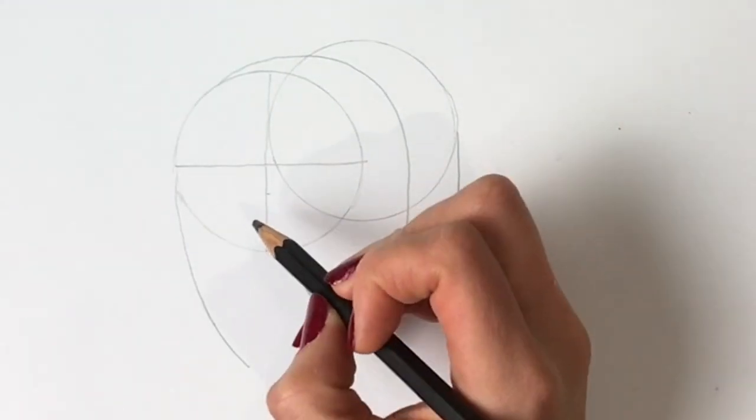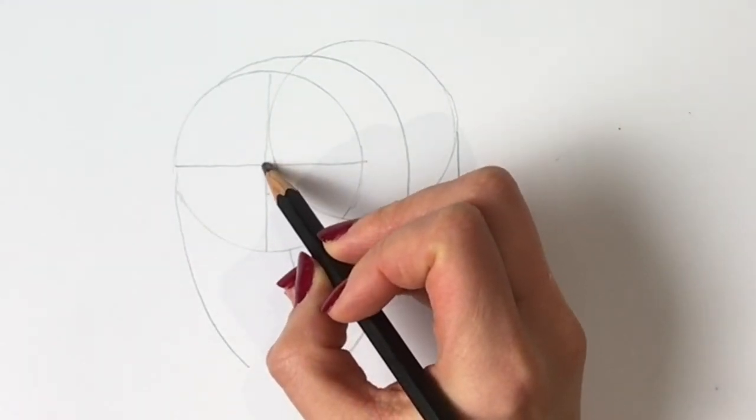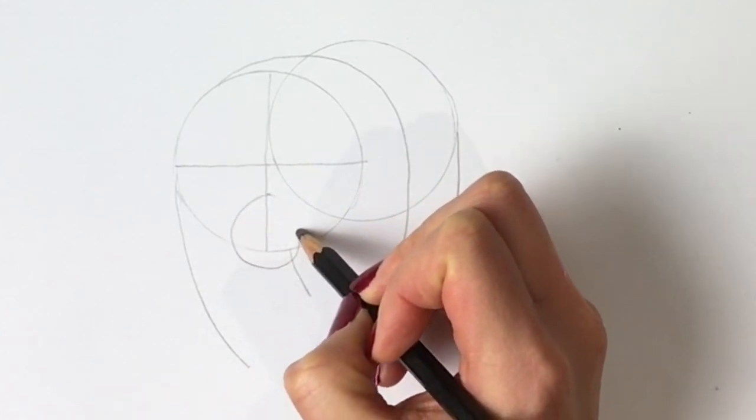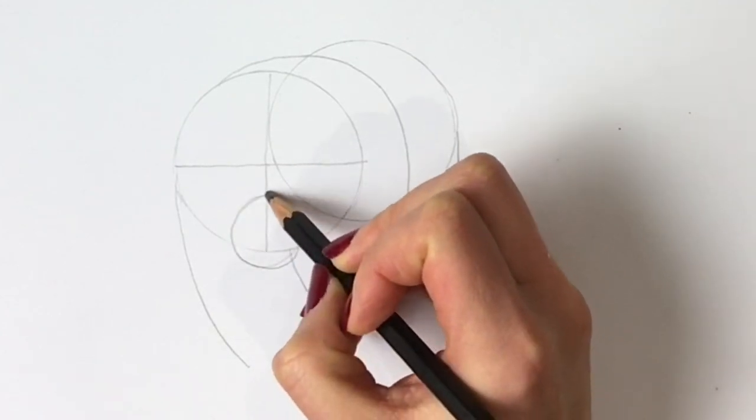So now we're going to add the muzzle. So from the center just come down a little bit and we're going to draw kind of a rough oval shape just like that.